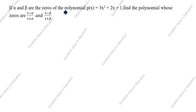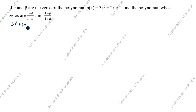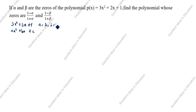If alpha and beta are the zeros of the polynomial p(x) = 3x² + 2x + 1. This is in the format ax² + bx + c, where a = 3, b = 2, and c = 1.